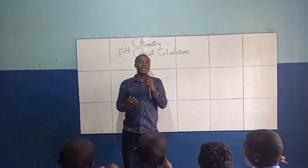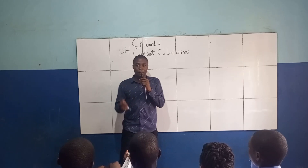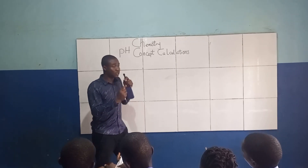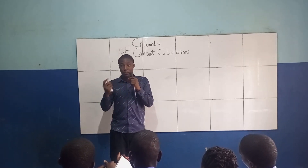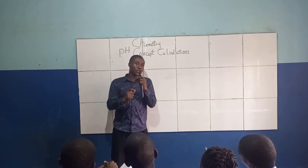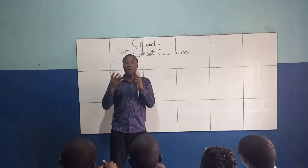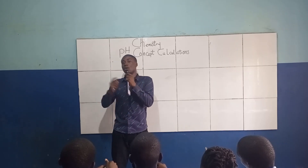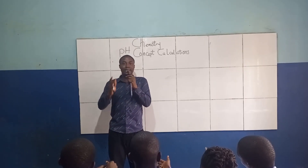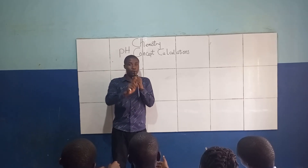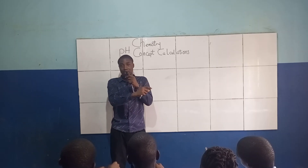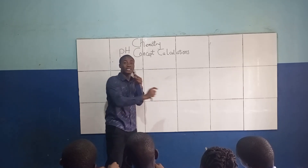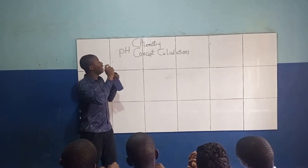Welcome back to my YouTube channel. In today's lesson I'll be discussing pH concept calculations. In my previous class I discussed the introductory aspect of the pH concept, where I said that pH measures the degree of acidity or alkalinity of a solution. There is a scale called the pH scale which ranges from 0 to 14. Today we'll be talking about the calculative aspect of the pH concept.